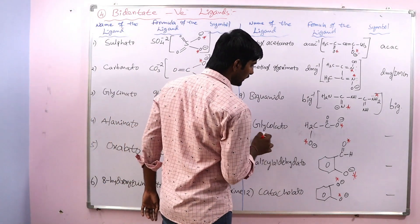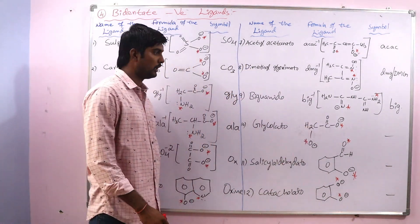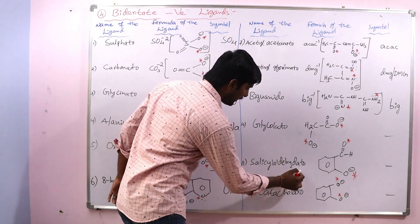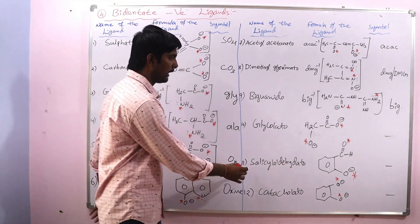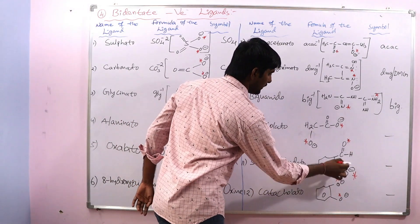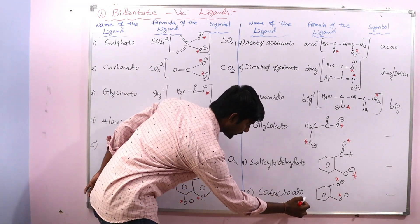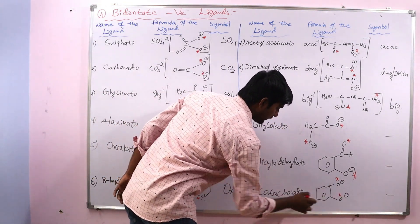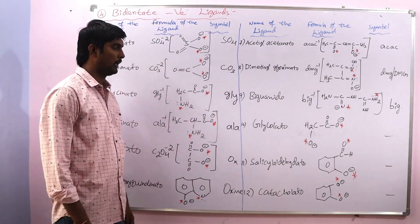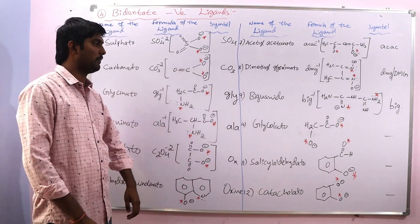Next is glycolato. Here also oxygen atoms are the donor atoms, so it is also symmetrical. Next is salicylaldehydato — here two oxygens are the donor atoms. Next is catecholato — here also two oxygen atoms are the donor atoms. For these last three ligands there is no specific symbol given, so you need to remember these structures.